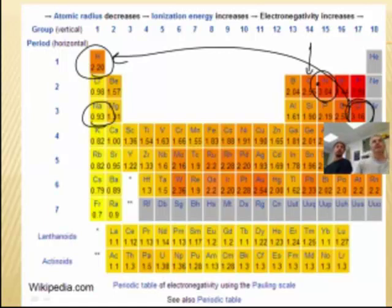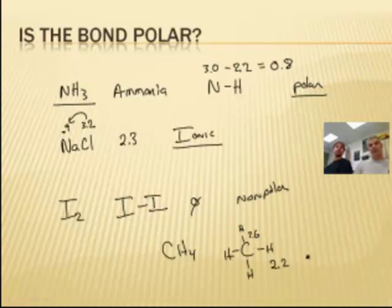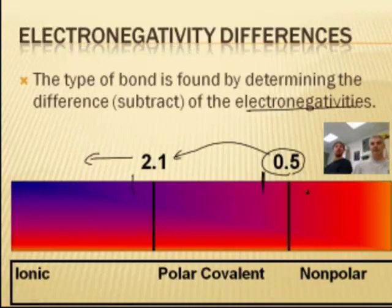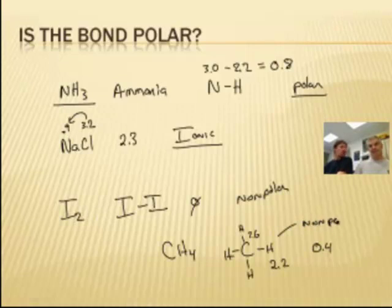This one's 2.6, it looks like to me. So this is 2.6. So 2.6 minus 2.2 is 0.4. And I believe the break point was 0.5. Yeah, so we're going to call that a non-polar bond. So I mean, it's ever so slightly polar because they're different, but they're still close enough that we refer to it as a non-polar bond.